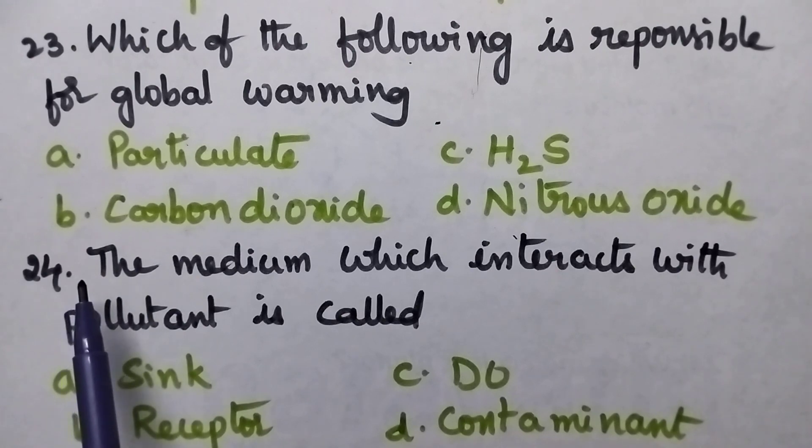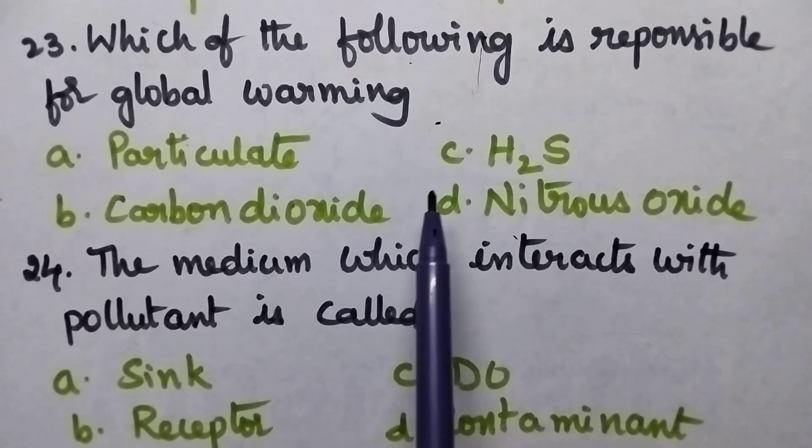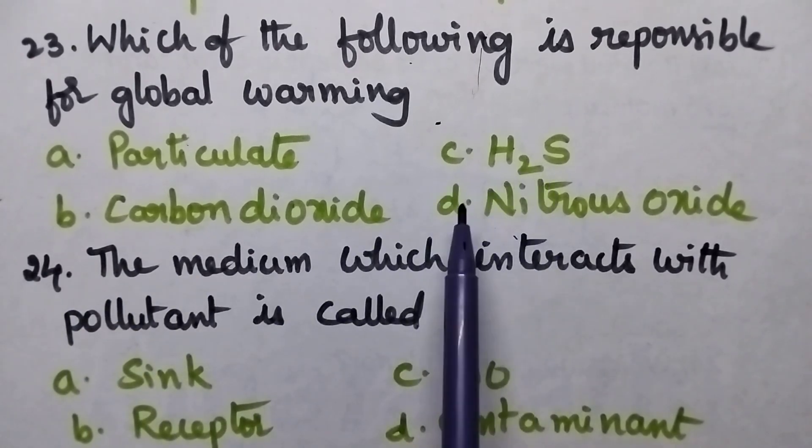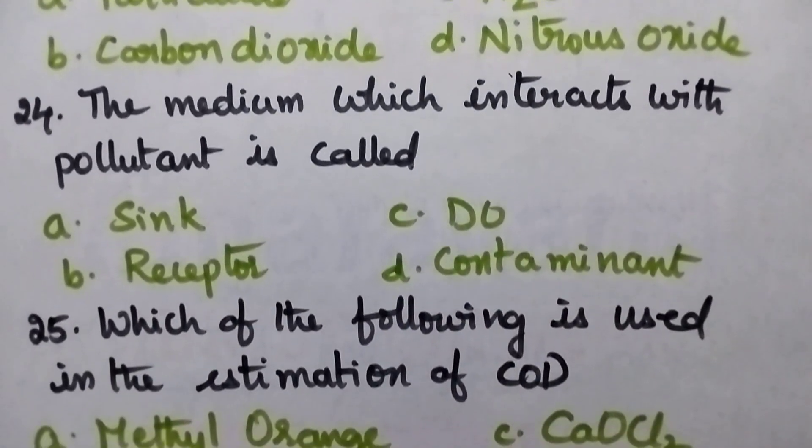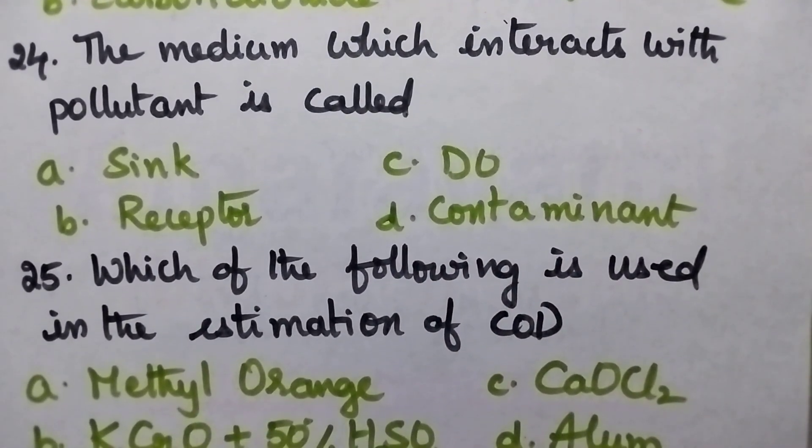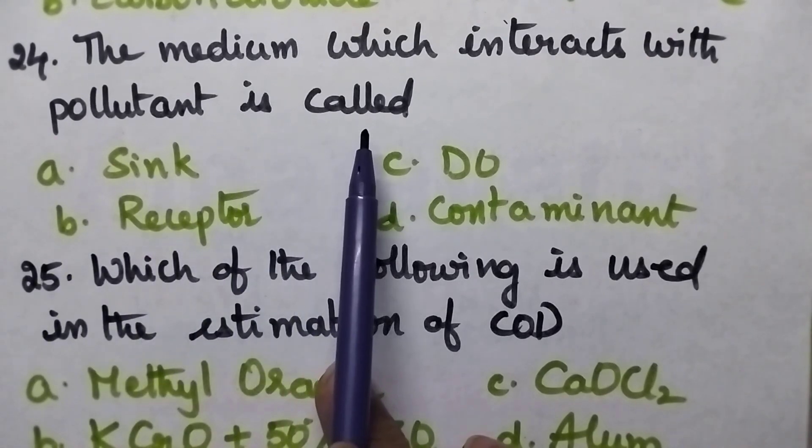Which of the following is responsible for global warming? A: Particulate, B: Carbon dioxide, C: H2S, D: Nitrous oxide.